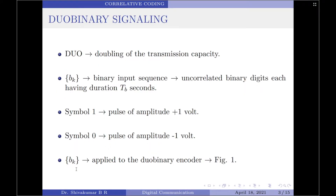Let us now start the discussion on duobinary signaling. The word duobinary implies doubling the transmission capacity of a binary system. We are considering a binary system here. Let us consider a binary input sequence Bk consisting of uncorrelated binary digits, each having a duration of 1 Tb seconds. Let symbol 1 be represented by a pulse of amplitude +1 V and symbol 0 by a pulse of amplitude −1 V.